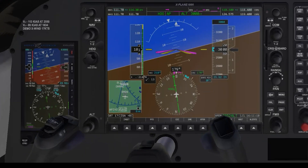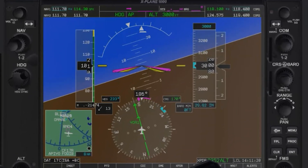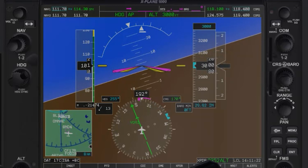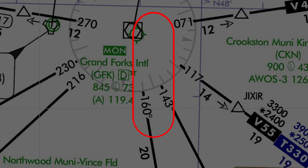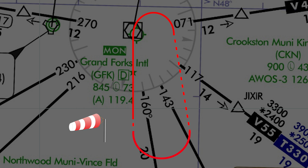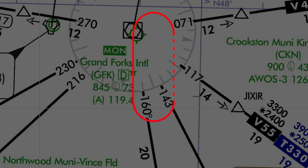A standard rate turn should always be used when flying a hold. This is important because a constant rate will allow your time and heading corrections to work. Ground speed will affect all factors of the hold. The goal for timed holding is to make the inbound leg one minute, and keep both the inbound and outbound turns standard rate no matter what wind conditions you are flying in. Adjustments should be made to the outbound leg to account for ground speed and a change in turn radius.